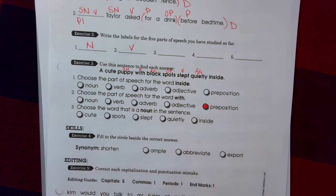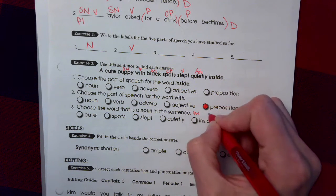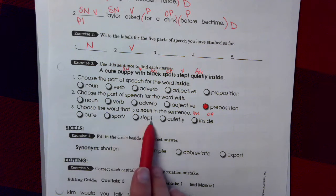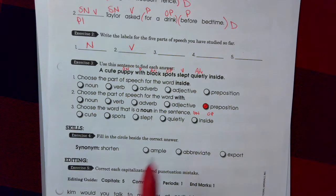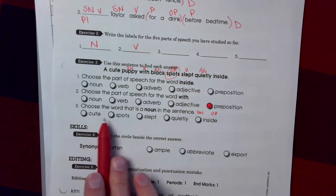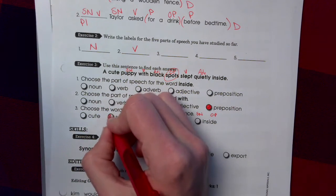Choose the word that is a noun in the sentence. So we're looking for either a subject noun or an object of the preposition. Subject noun was puppy. Puppy's not an option. Let's find that object of the preposition. Spots. Spots. Excellent. So that is our noun.